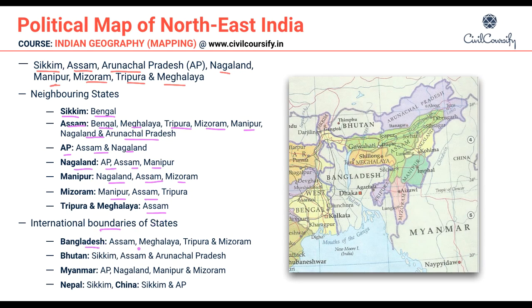For international boundaries: Bangladesh shares boundaries with Assam, Meghalaya, Tripura, and Mizoram. Bhutan shares boundaries with Sikkim, Assam, and Arunachal Pradesh. Myanmar shares boundaries with Arunachal Pradesh, Nagaland, Manipur, and Mizoram. Nepal shares boundaries with Sikkim. China shares boundaries with Sikkim and Arunachal Pradesh.